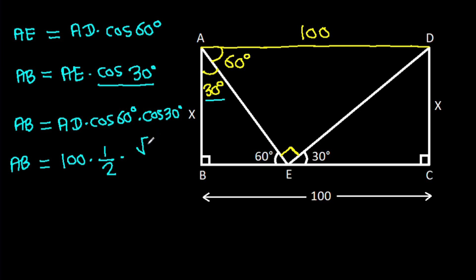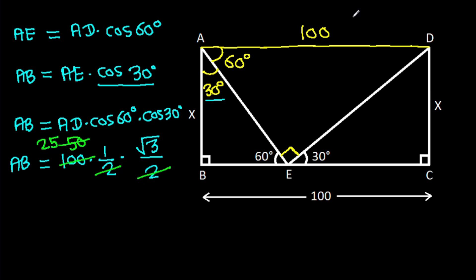And cos 30 degrees is root 3 over 2. And 2 times 50 is 100, and 2 times 25 is 50. So AB will be 25 times root 3.